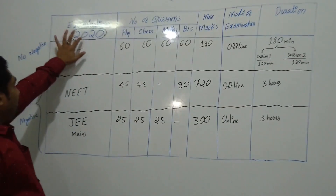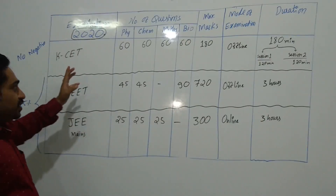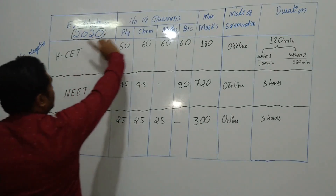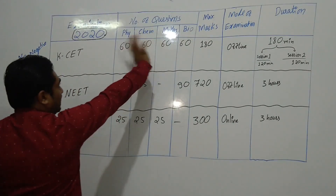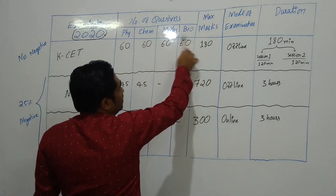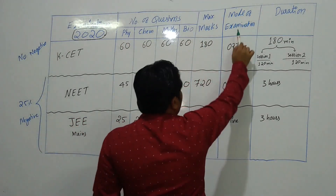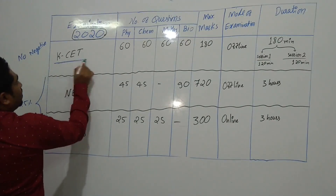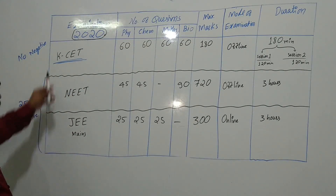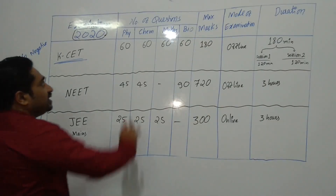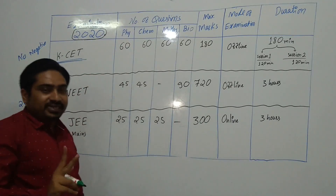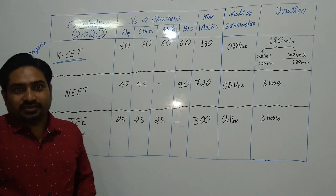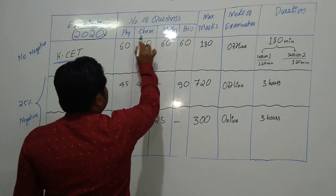These are the particulars for the year 2020 examinations — the pattern, number of questions from each subject, maximum marks, mode of examination, and duration. For KCET, the Karnataka Common Entrance Test, the exam is conducted in two sessions, and you have to select three subjects: physics, chemistry, and math, or physics, chemistry, and biology.